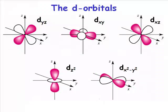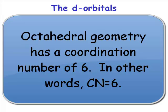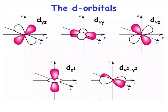And why does that matter? Well, it matters because if we're considering an octahedral coordination, and normally in transition metal chemistry we will be considering an octahedral coordination of ligands.